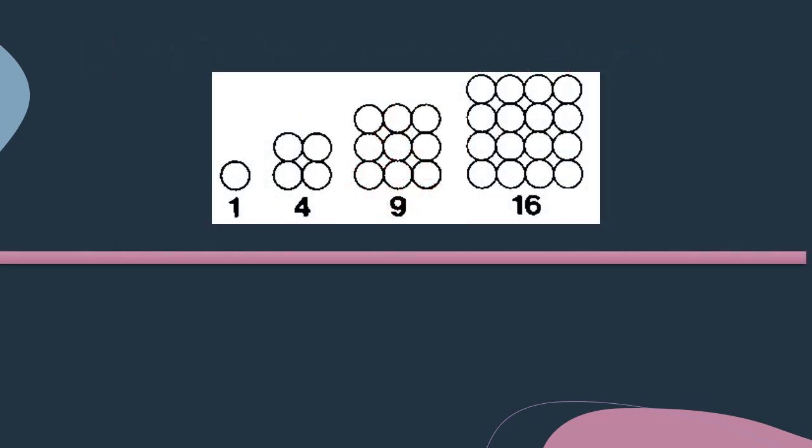Let's take a look at this diagram. From left to right first we have one dot.